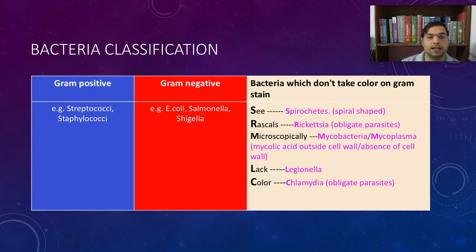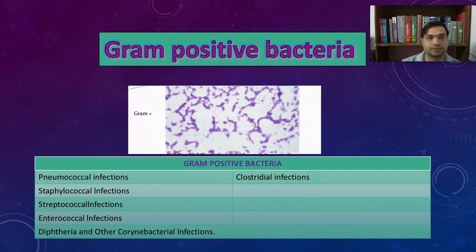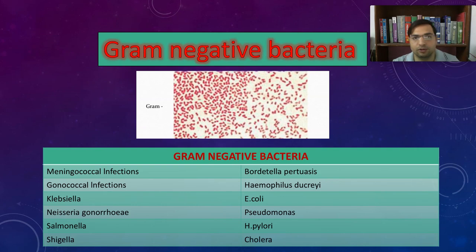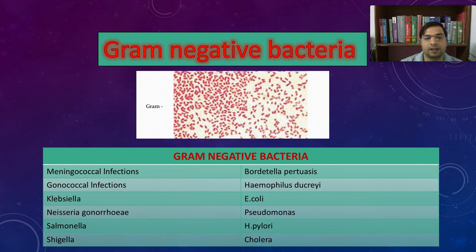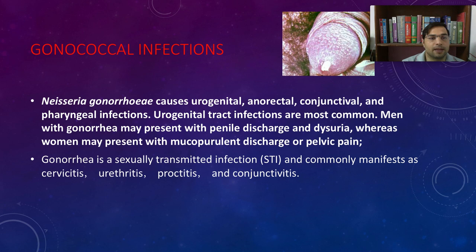Today we are going to start with gram negative bacteria. We already know that the stain acquired by gram negative bacteria is red. The common gram negative bacteria are: meningococcal, gonococcal, Klebsiella, Neisseria gonorrhoeae, Salmonella, Shigella, Bordetella, Haemophilus, E. coli, Pseudomonas, H. pylori, and Vibrio cholerae.